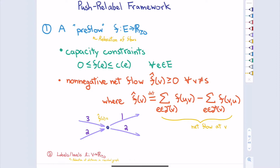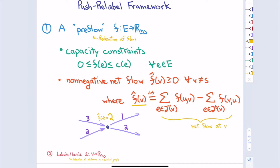I use F-hat of V to denote the difference of the amount of flow going in minus the amount going out. The only constraint is that this quantity is always non-negative. So in the example on the bottom left, I have five units going in and three going out, so the excess flow at V is two. This algorithmic framework allows us to hold on to extra flow at various vertices — eventually it needs to get all that flow into T, but until it does, it's allowed to cheat in this regard.